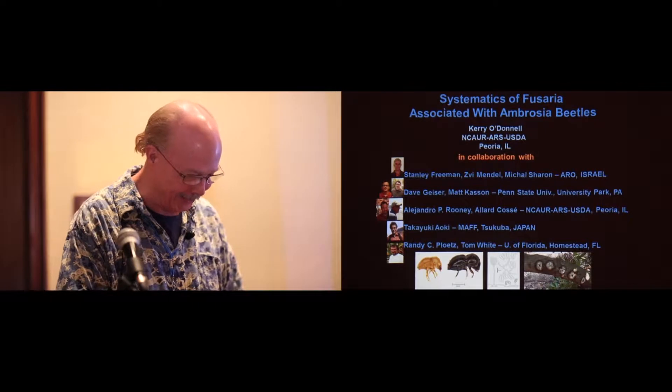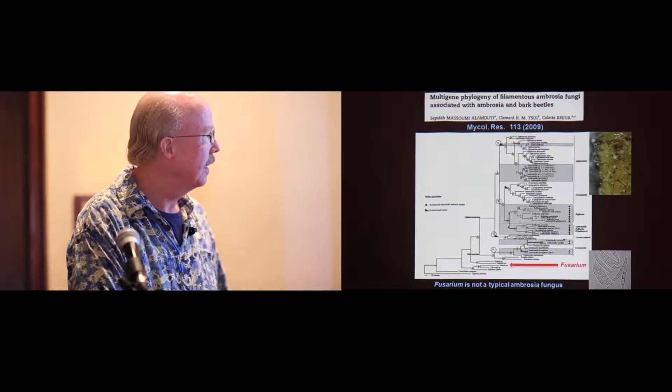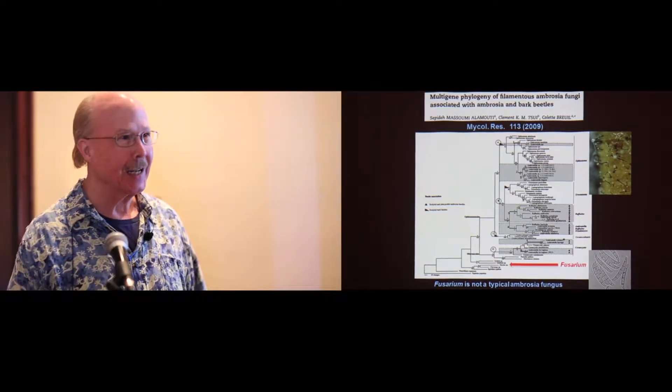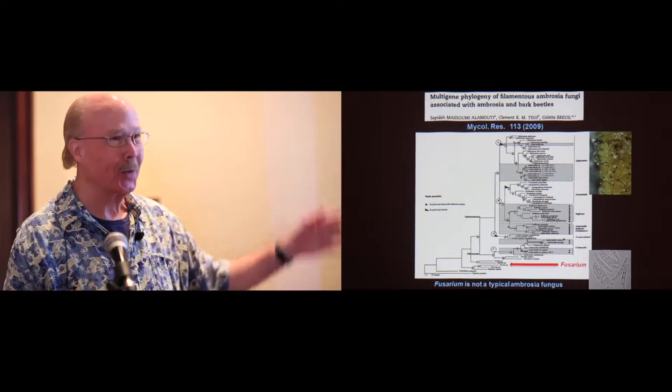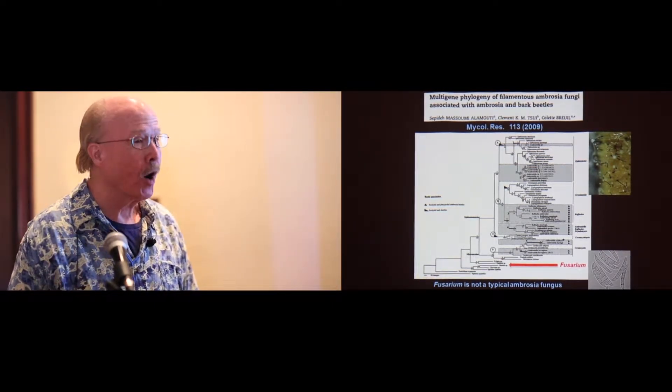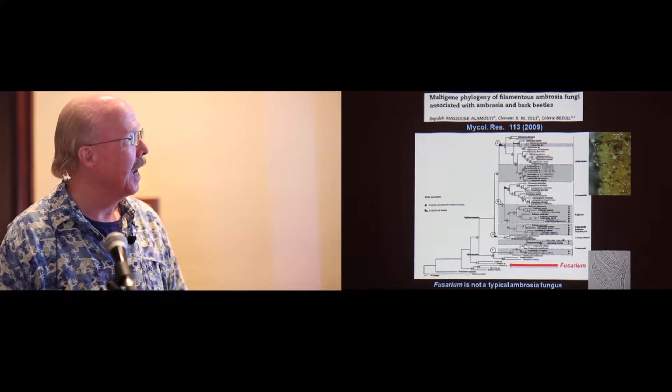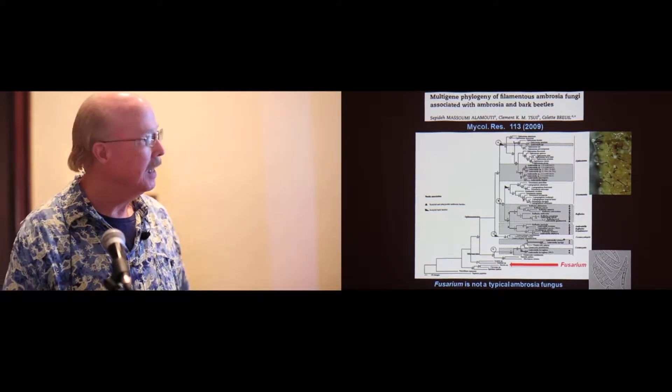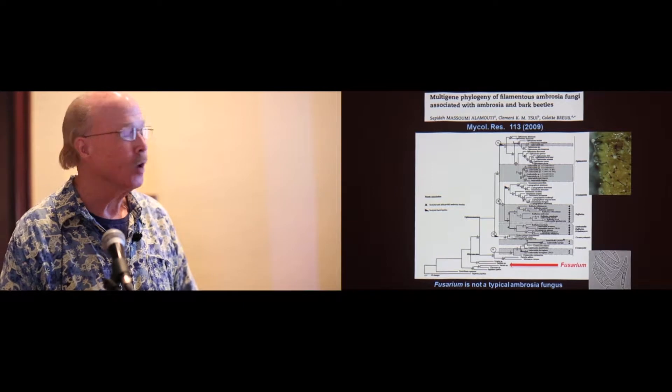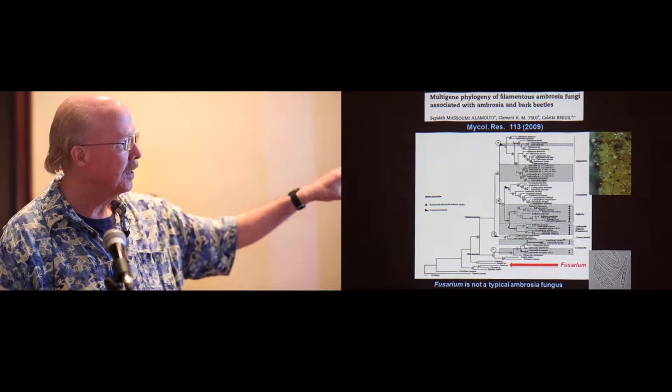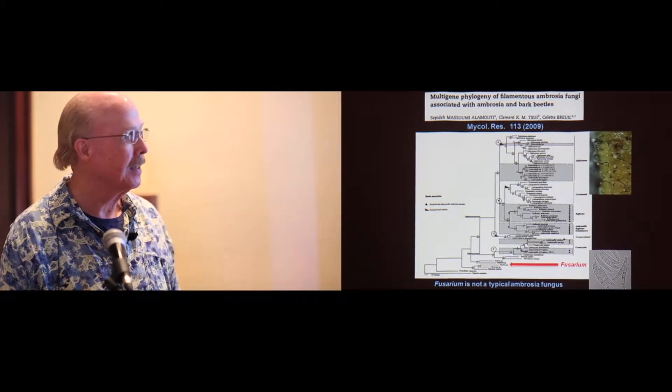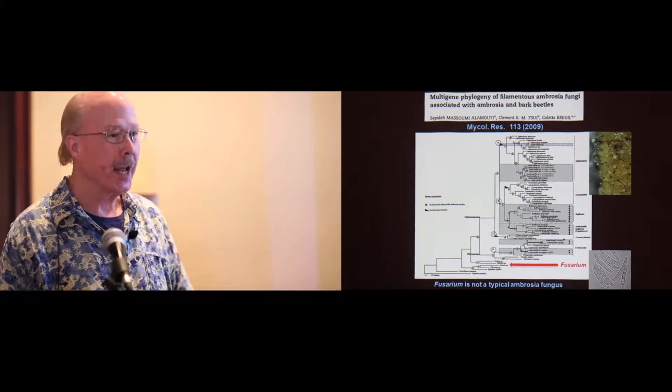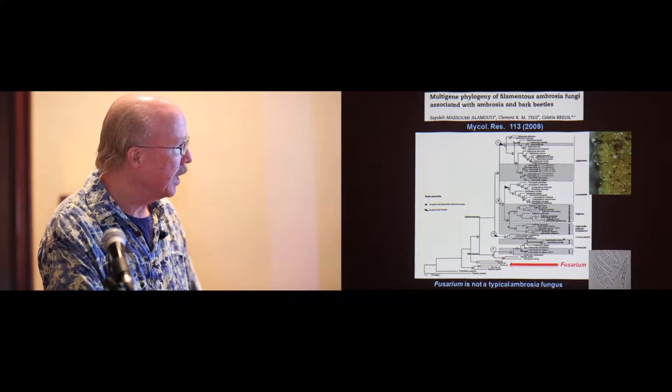Yesterday I heard the F word mentioned over and over again, fusarium, but in this particular review of the ambrosia fungi, the filamentous ones, you'll note that fusarium didn't even make it on to the radar. So I added it. It's in a completely different order from your typical ambrosia fungi in the ophiostomatales and the microascales. And fusarium is, as the name suggests, characterized by these banana-shaped conidia.